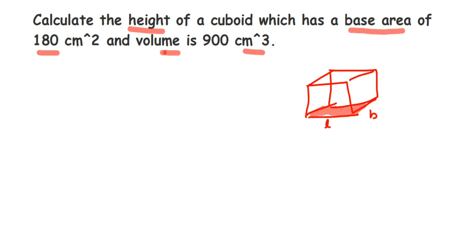They have given the base area, so if you see here, this face of the cuboid is a rectangle and the dimensions are length and breadth. And we know that area of rectangle is length into breadth, so l into b is 180 centimeter square. I hope it's clear.